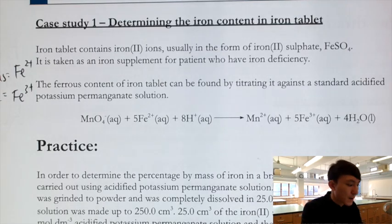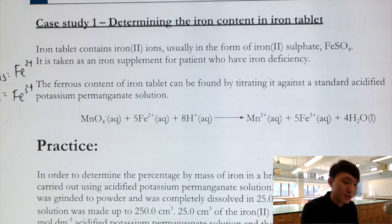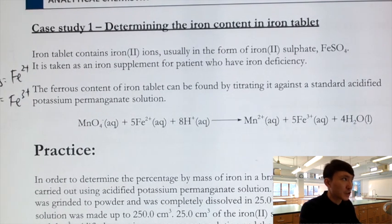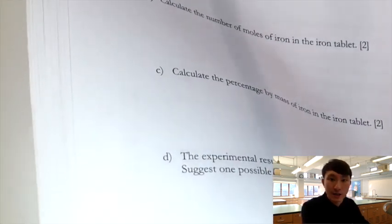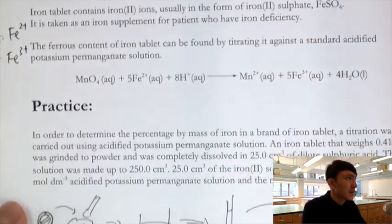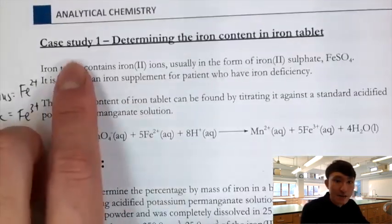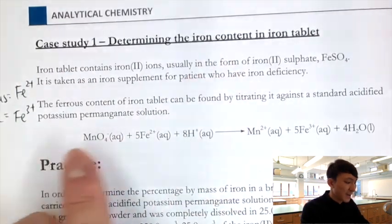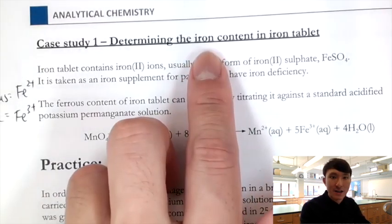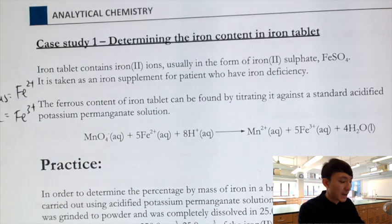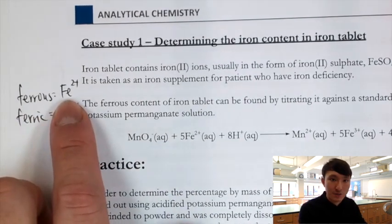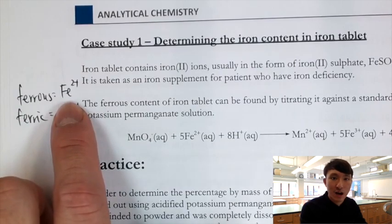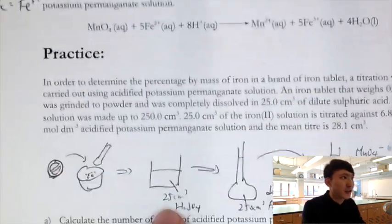In this video we are going to talk about redox titration. We'll look at some case studies and work out questions based on the DSC syllabus. This is page 32 of the analytical chemistry notes. Last time we introduced this case study: the determination of iron content in an iron tablet. First, you need to know there is no iron element in the iron tablet — they all exist as Fe2+.